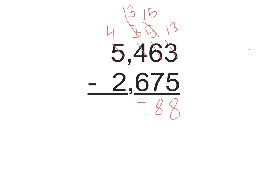So 13 minus 6 is 7, and then I'm left with 4,000s, take away 2,000s, 2,000s left.